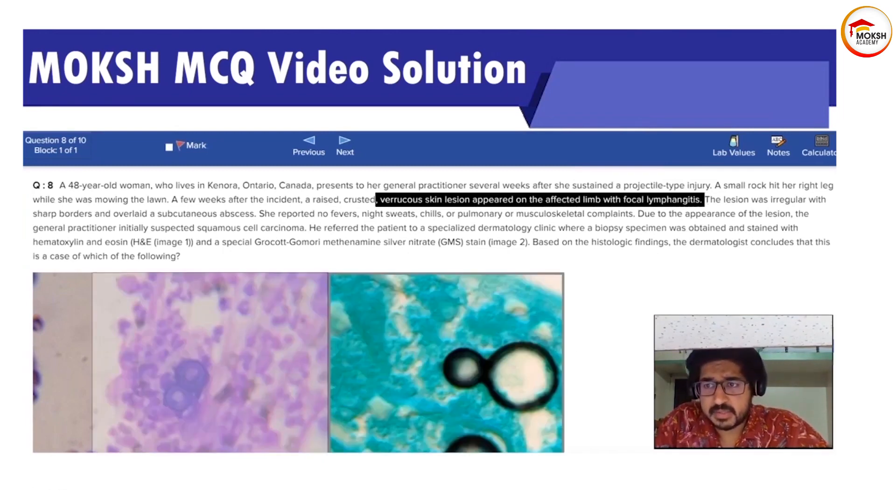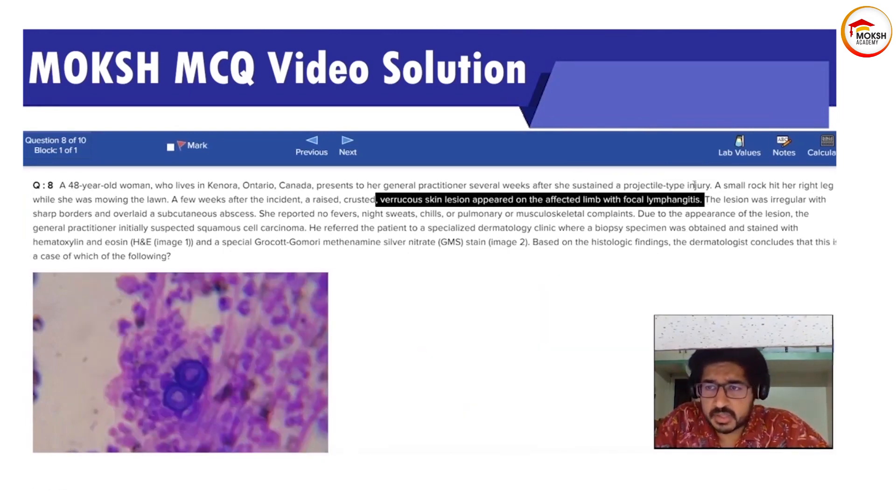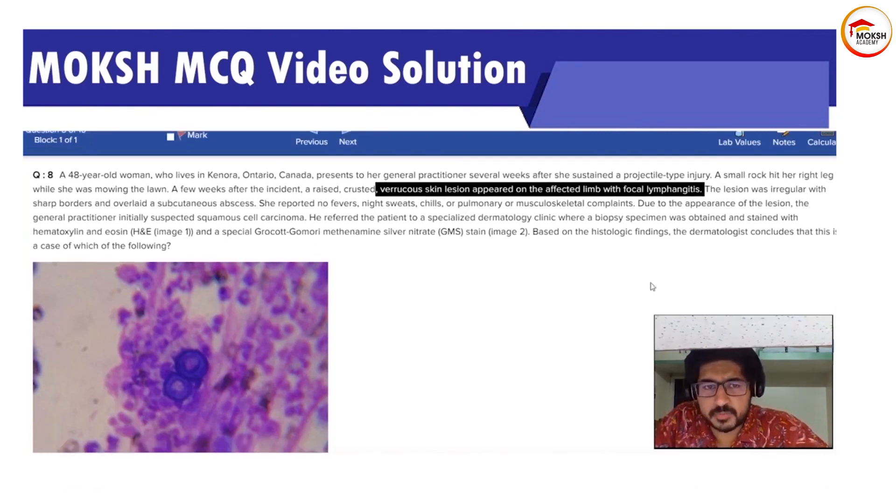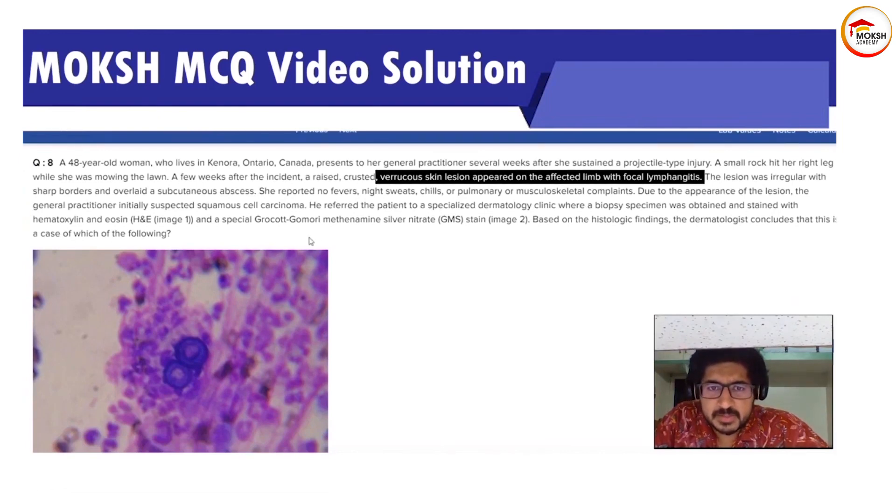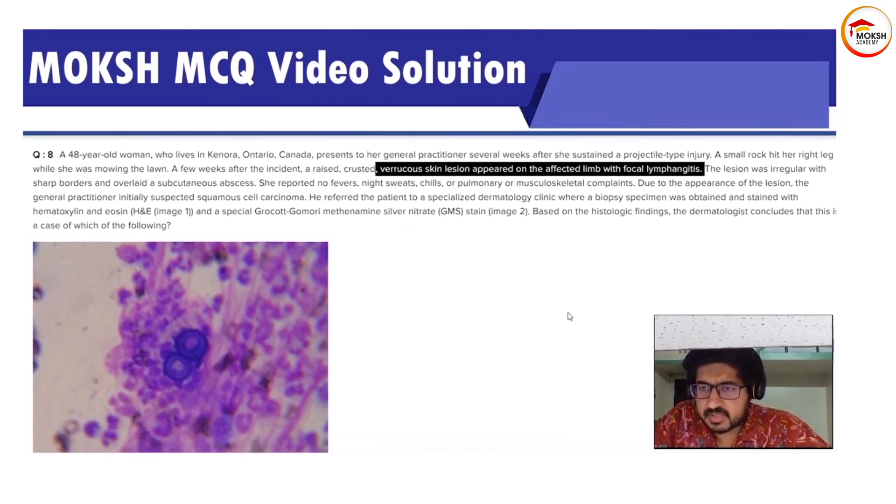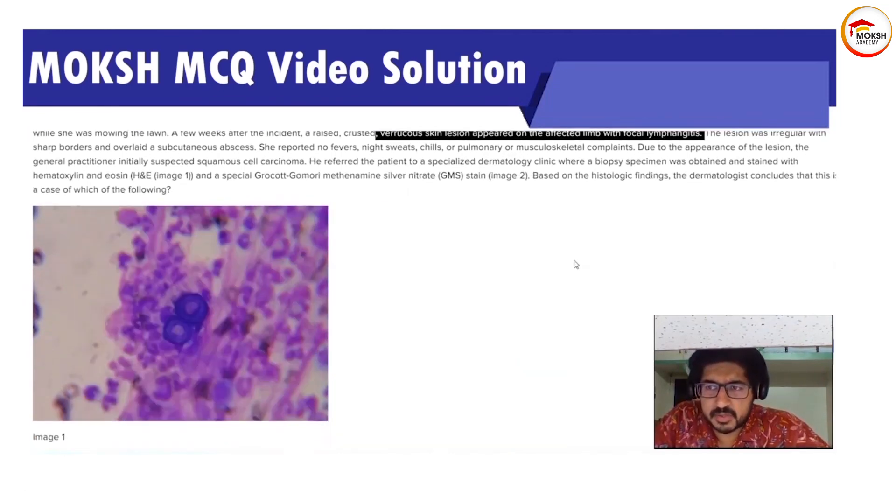The lesion had focal lymphangitis, was irregular with sharp borders, and overlaid a cutaneous abscess. She reports no fevers, night sweats, chills, or pulmonary or musculoskeletal complaints. Due to the appearance of the lesion, the general practitioner suspected squamous cell carcinoma. He referred her to a special dermatology clinic where a biopsy specimen was obtained and stained with H&E and special Grocott-Gomori methenamine silver nitrate stain.